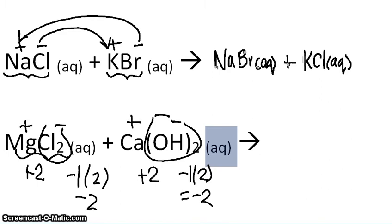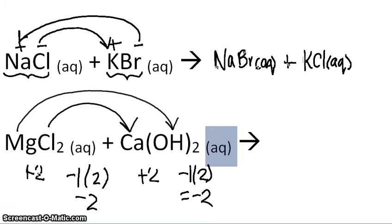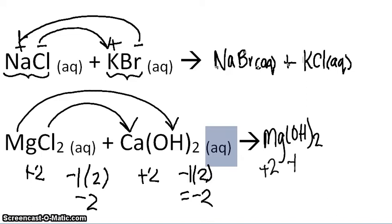We're going to displace both the anion and the cation. Since calcium and magnesium both have a plus two charge, their anions are just going to switch. We let calcium bond to chlorine, and magnesium bond with hydroxide. We get magnesium hydroxide — magnesium has a plus two charge and hydroxide has a minus one charge times two, giving minus two. Our charges balance. We also verify one magnesium, two oxygens, and two hydrogens on both sides.